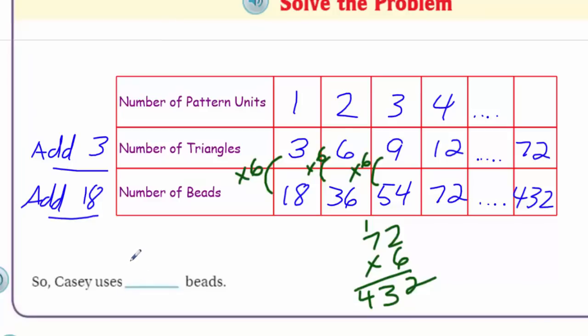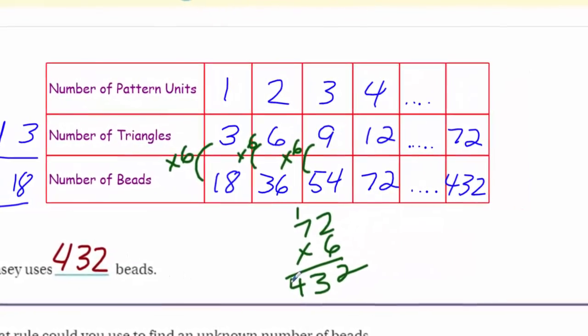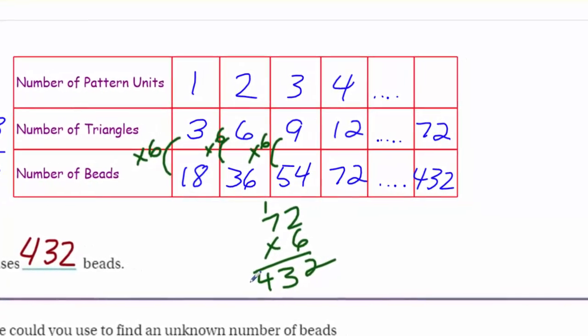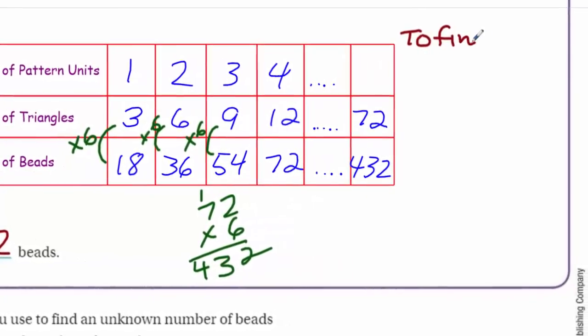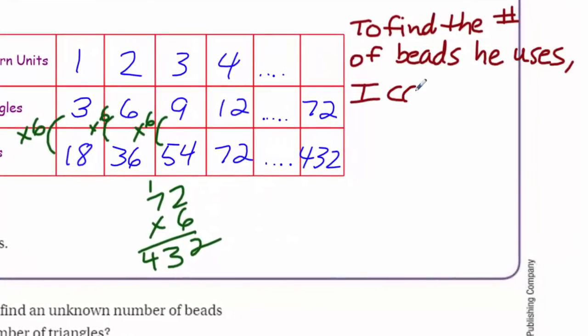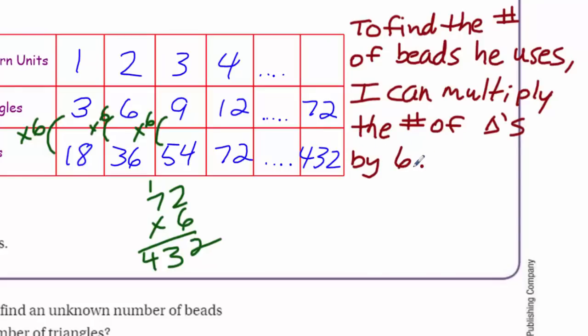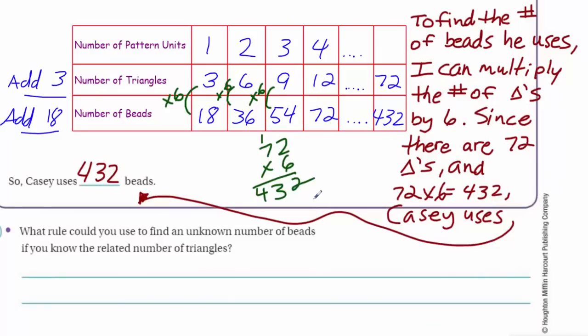So, Casey uses 432 beads. Now, I want to make sure that we have our notes down to make sure that you understood how I did that problem. So, the key thing, what the problem was asking us was the number of beads that Casey uses for a costume that's going to have 72 triangles. The table helped us make the problem simpler. So, what did I do? Well, we stated this, to find the number of beads he uses, I can multiply the number of triangles by six, because that's indeed what we did do, since there are... I just wanted to write those notes down, because I think it's important that we understand the problem, and how the number of triangles and beads were related.